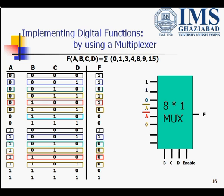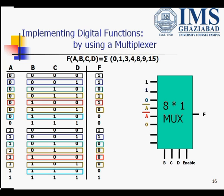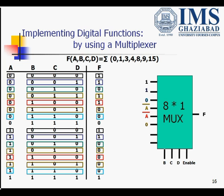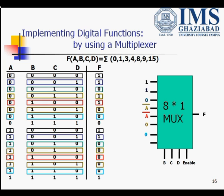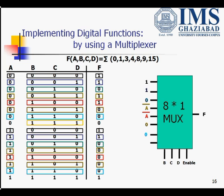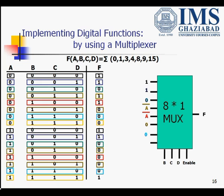When b,c,d = 1,1,0: when a=0 the function value is 0, and when a=1 the function value is 1 — irrespective of a the function remains 0, so our next input is 0. In the last combination, b,c,d = 1,1,1: when a=0 the function is 0, and when a=1 the function is 1 — the function depends on a, so our last input is a.